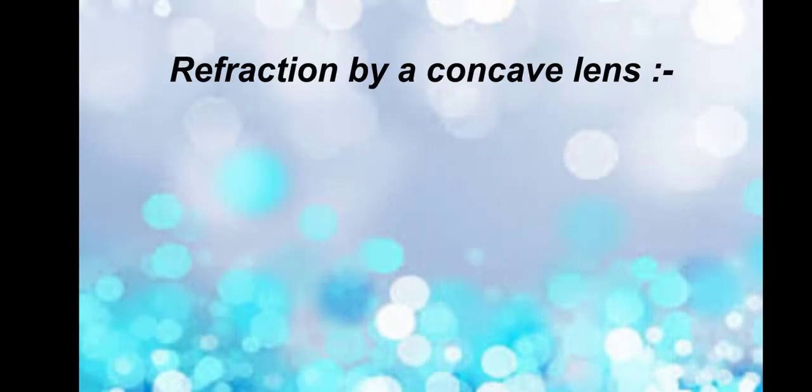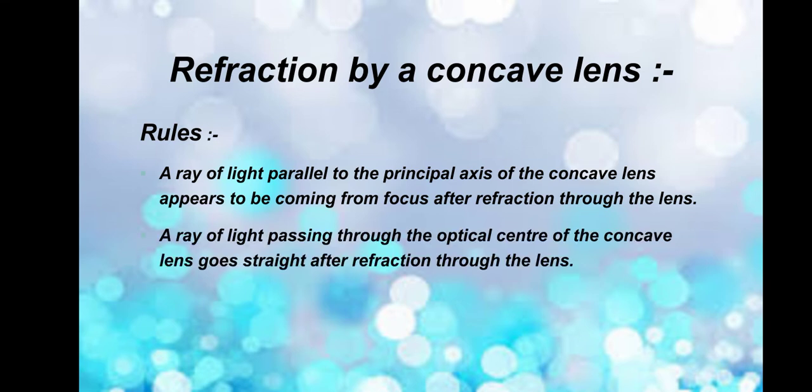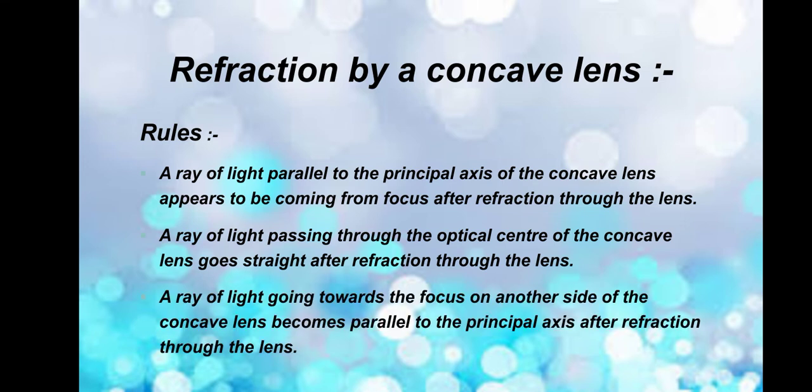Refraction by a concave lens — rules. A ray of light parallel to the principal axis of the concave lens appears to be coming from the focus after refraction through the lens. A ray of light passing through the optical center of the concave lens goes straight after refraction. A ray of light going towards the focus on the other side of the concave lens becomes parallel to the principal axis after refraction through the lens.